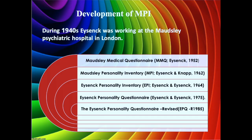With the lie scale added, it was published as the Eysenck Personality Inventory. In 1975, Eysenck added a third dimension to his personality theory — the dimension of psychoticism. The EPI was revised and a new questionnaire was published in 1975 under the name of Eysenck Personality Questionnaire. It was found that the EPI did not have very good reliability, so it was again revised and a revised version was published in 1985, called the Eysenck Personality Questionnaire Revised.